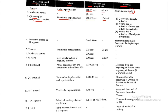Within the QRS complex: the Q wave is due to septal activation, the R wave is due to activation of the major part of both ventricles, and the S wave is due to activation of the basal parts of the ventricles. Collectively, the QRS complex represents ventricular depolarization.